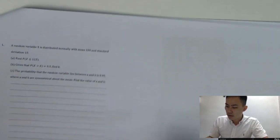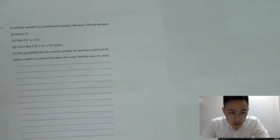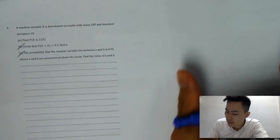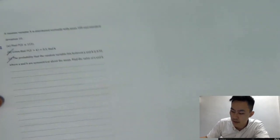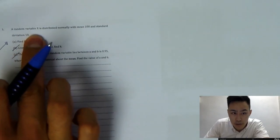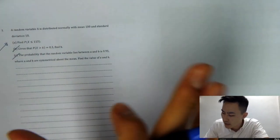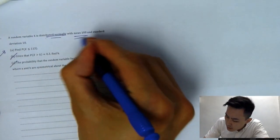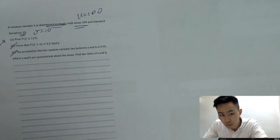Let's do one exam question. A random variable X is distributed normally with mean μ = 100 and standard deviation σ = 10. We'll focus on part A — finding the probability. Find the probability that X is less than or equal to 113. Draw the line, mark 100 in the middle and 113 on the right-hand side, and shade everything less than or equal to 113.